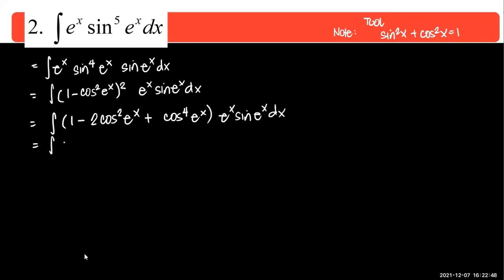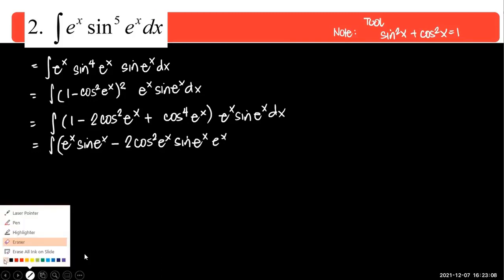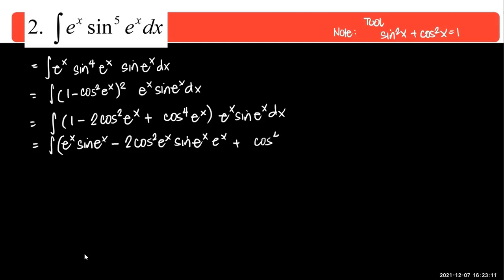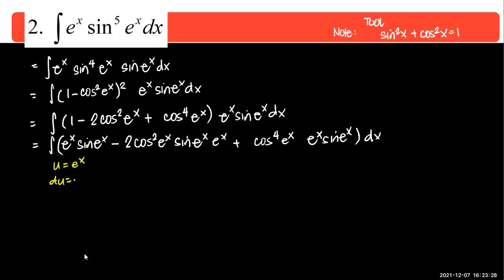Expanding gives 1 minus 2 cosine squared of e to the x plus cosine to the 4 of e to the x, all times e to the x sine of e to the x dx. When we distribute, the terms become: e to the x sine of e to the x, minus 2 cosine squared e to the x times e to the x sine of e to the x, plus cosine to the 4 e to the x times e to the x sine of e to the x. If u is e to the x, then du is e to the x dx. The first term integrates readily as negative cosine of e to the x.